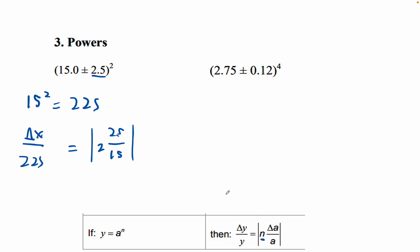But nobody ever writes a negative uncertainty. Okay, so 225 times 2 times 2.5 divided by 15, that's 75. So delta X equals 75. And now we're set, the answer is 225 plus or minus 75.